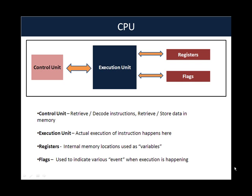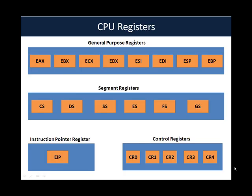Think of registers as internal variables inside the CPU whose values keep changing depending on what the CPU is doing. Finally, we have flags, which are used to indicate various events when execution happens. For example, the zero flag is set whenever any instruction results in a zero — say you add or subtract two numbers and the result is zero. What is most important to understand from a CPU perspective is the CPU registers, which we will be using for most of our assembly language programming.